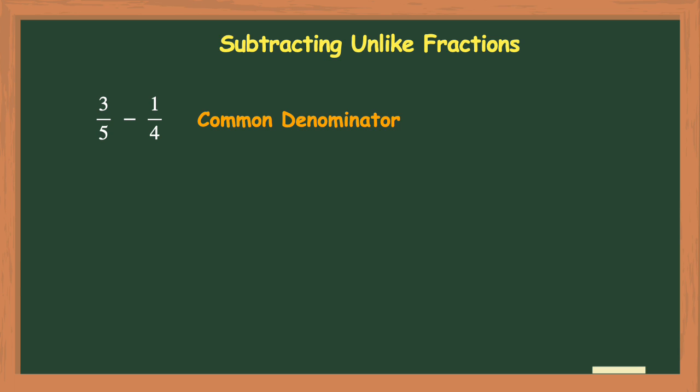But if you don't readily see that, you can always make a list of each denominator's multiples until you can see what they both share. So I like to list out at least 4 or 5 multiples for each denominator. I like to start with the largest of the two denominators, which is 5. Next, I list out a few multiples of 5. So 5 times 1 is 5, 5 times 2 is 10, 5 times 3 is 15, and 5 times 4 is 20.